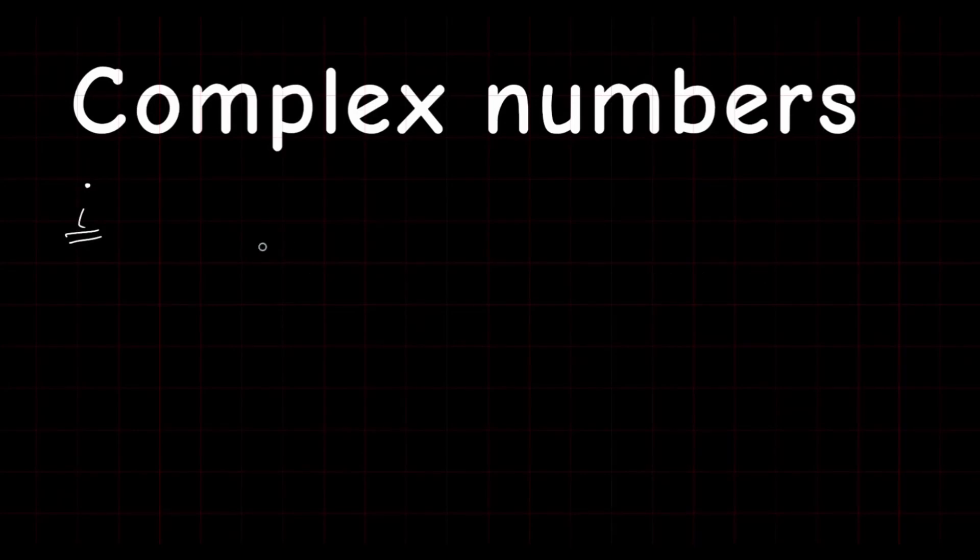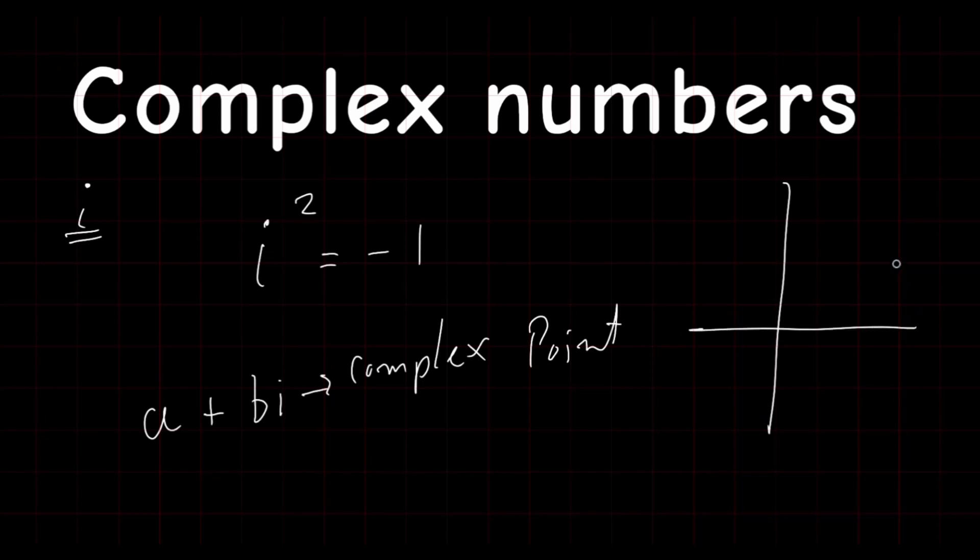Now that our animations are done, let's look at some complex numbers. The unit complex number is iota and it has a special property that when it is squared, it gives minus 1. And a general complex point is written in the form of A plus BI, where A is the real part and B is the imaginary part. This point does not live in the Cartesian plane, but instead it lives in the complex plane.